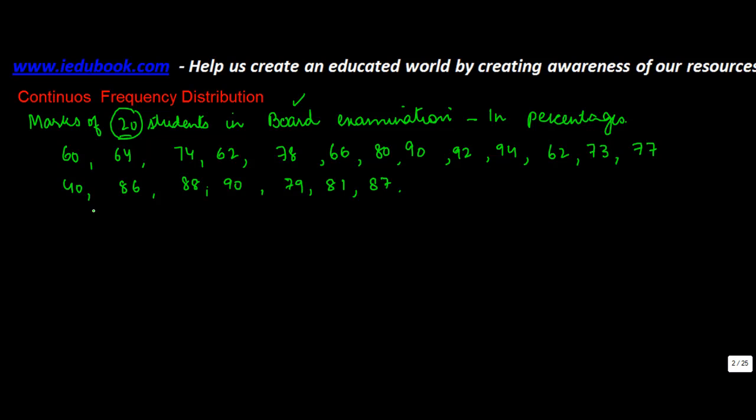So in order to overcome this situation, what do we do? We try to arrange numbers within certain defined parameters, and these defined parameters normally for statistical purpose we call them as class or groups.